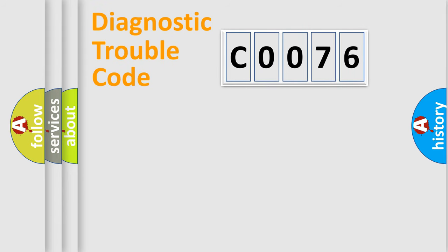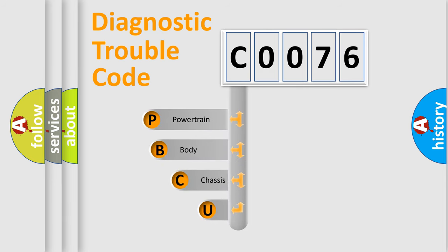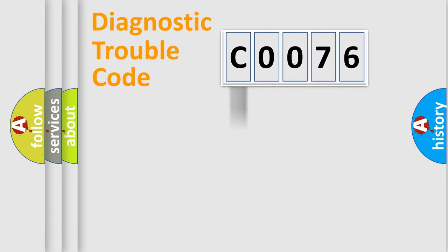Let's do this. First, let's look at the history of diagnostic fault code composition according to the OBD2 protocol, which is unified for all automakers since 2000. We divide the electric system of the automobile into four basic units: Powertrain, Body, Chassis, and Network.